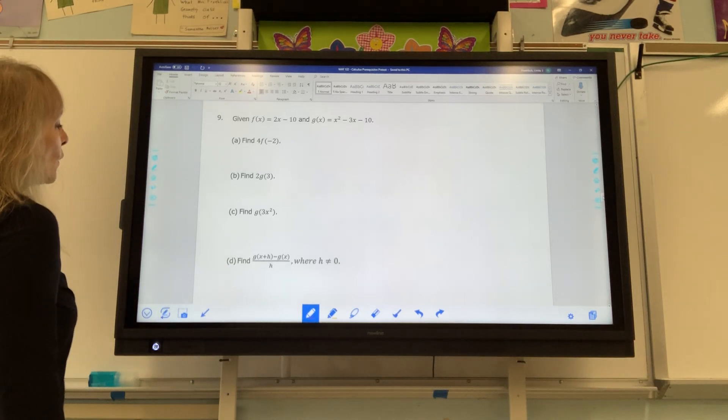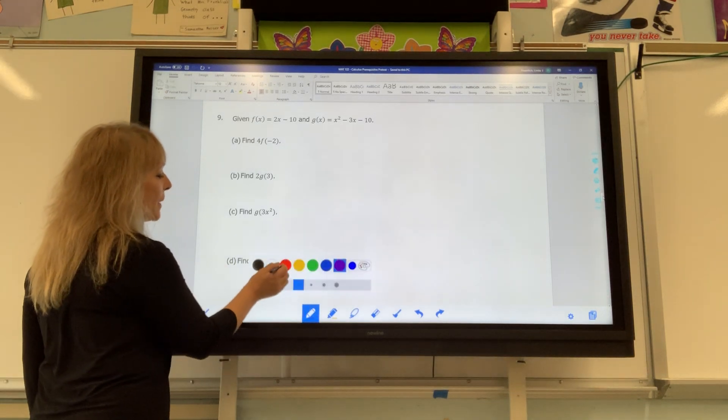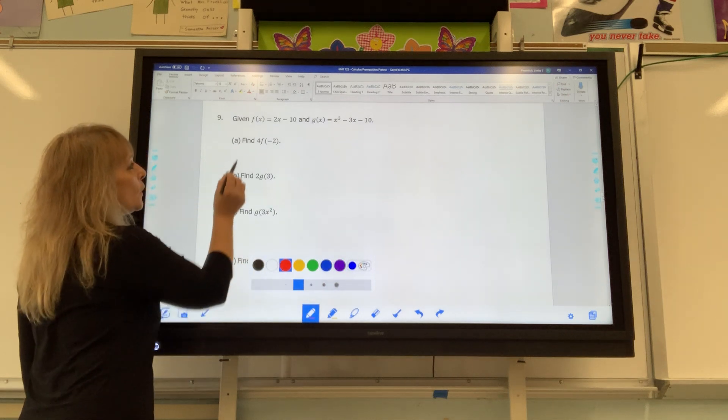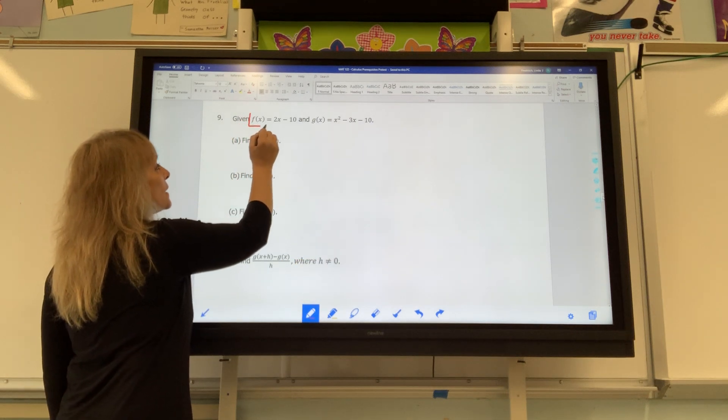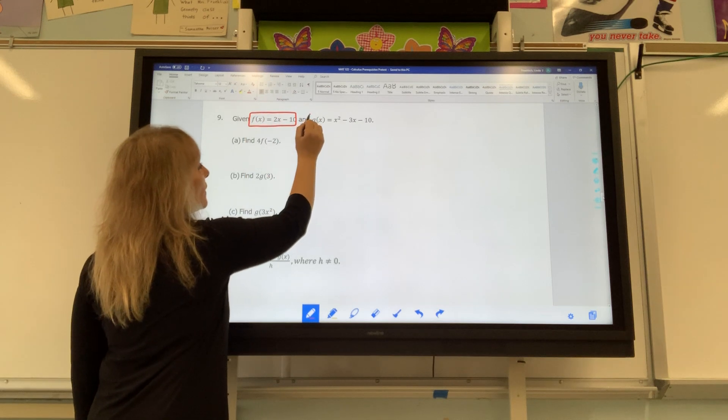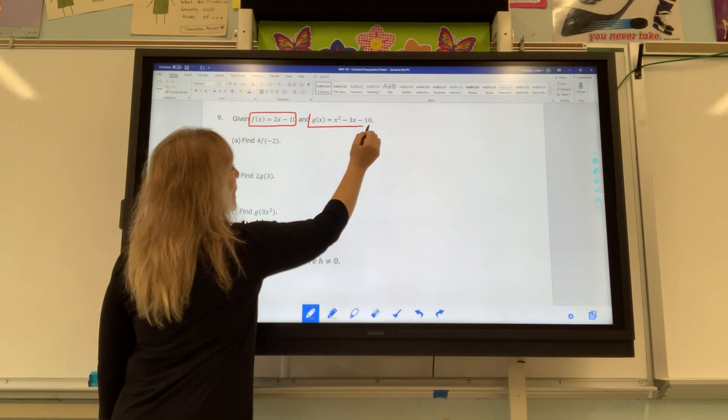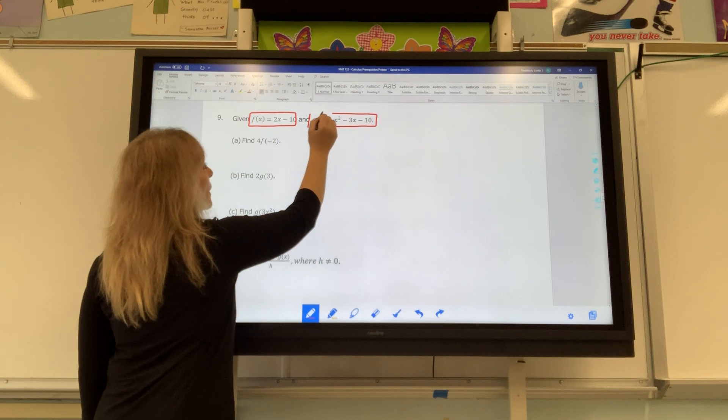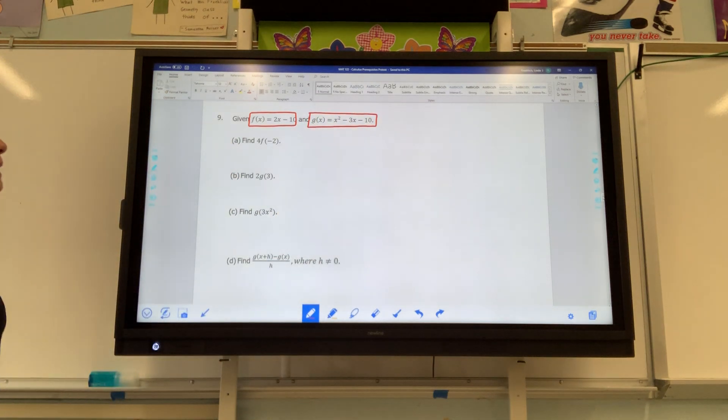Okay, so for question number nine, I am asking you to note that f of x is 2x minus 10 and that g of x is the quadratic x squared minus 3x minus 10.